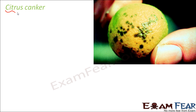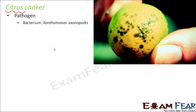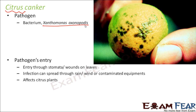Citrus canker is named after citrus fruits and is seen in citrus plants like lemon and oranges. The pathogen is a bacterium called Xanthomonas axonopodis. It enters the plant through stomata or wounds on leaves. Infection can spread through water, wind, or contaminated equipment — since plants cannot move, pathogens must be carried by other agents.